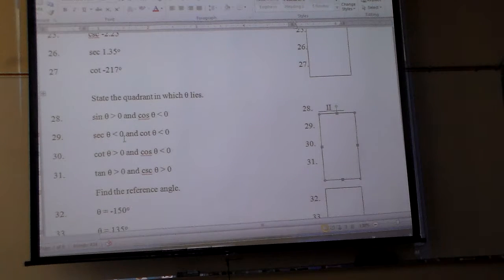Secant is the reciprocal of cosine, and cotangent is the reciprocal of tangent. Secant is what? Negative. And cotangent is what? Everybody see that? They're both negative.